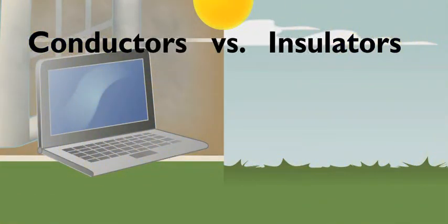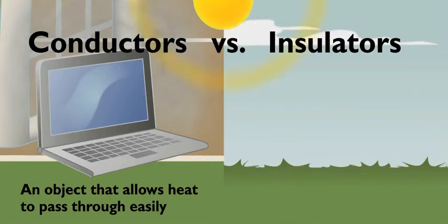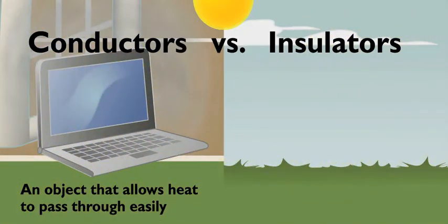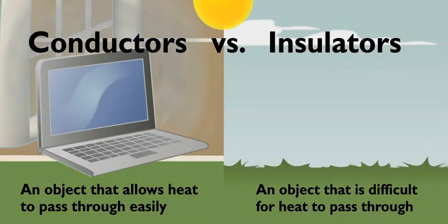Good question. Some objects are good conductors. They let heat pass through them very easily. Your laptop is metal, and metal is an excellent conductor. The grass we're standing on is an insulator, the opposite of a conductor. Insulators are difficult for heat to move through, so they stay cooler.